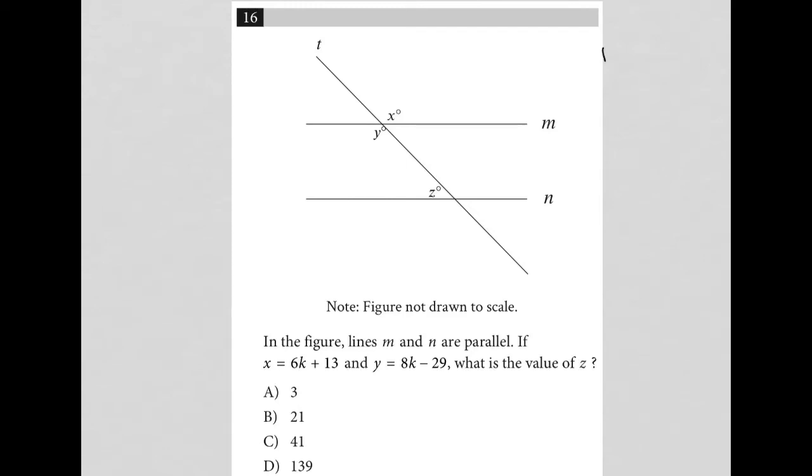This question is a diagram question. We have these two lines, m and n. They look like they're parallel, but we'll have to read to see if that's the case. Then we have these angles and their relationships. Regardless of parallel or not, x and y are equal to each other. x degrees is congruent to y degrees because of vertical angles. Let's read the rest of the question and see what else we can figure out.